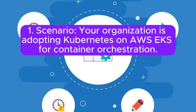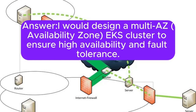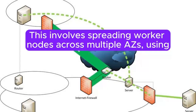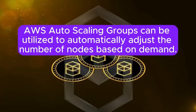Scenario 1: Your organization is adopting Kubernetes on AWS EKS for container orchestration. How would you design the Kubernetes cluster architecture to ensure high availability and fault tolerance? Answer: I will design a multi-availability-zone EKS cluster. This involves spreading worker nodes across multiple AZs, using multiple subnets, and leveraging EKS features like managed node groups. AWS auto-scaling groups can be utilized to automatically adjust the number of nodes based on demand.